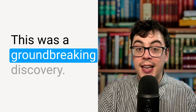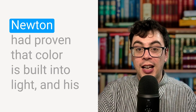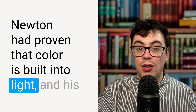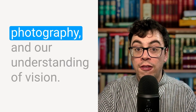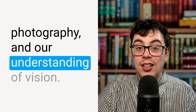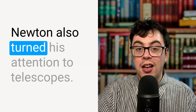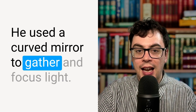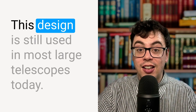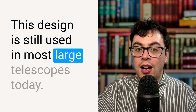This was a groundbreaking discovery. Newton had proven that colour is built into light, and his experiments laid the foundation for modern physics, photography, and our understanding of vision. Newton also turned his attention to telescopes. At the time, most telescopes used lenses to bend light. Newton invented something completely new — the reflecting telescope. He used a curved mirror to gather and focus light, and this design is still used in most large telescopes today.